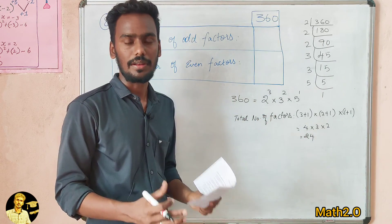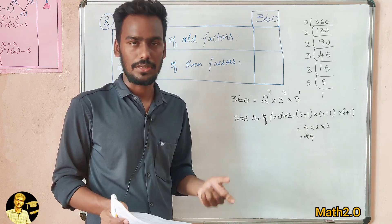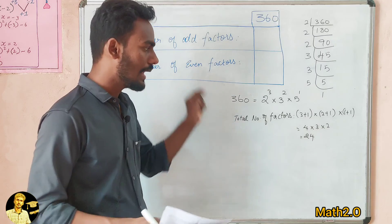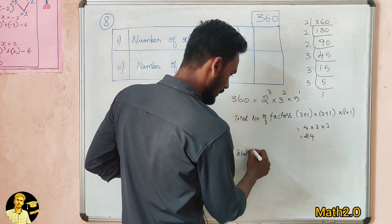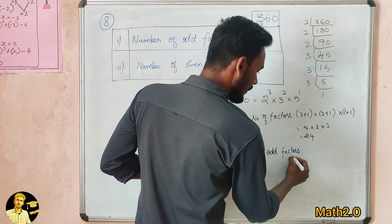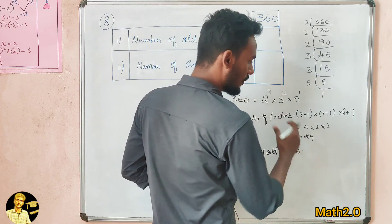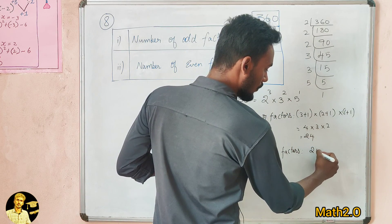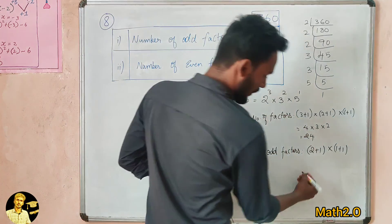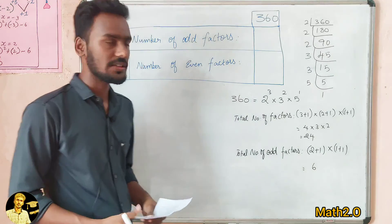To find the odd number of factors, we skip the power of 2, since any multiple of 2 gives an even number. So we skip 2 and only include the powers of 3 and 5. That gives us 2 plus 1 into 1 plus 1, which is 3 into 2 equals 6. The total number of odd factors for 360 is 6.